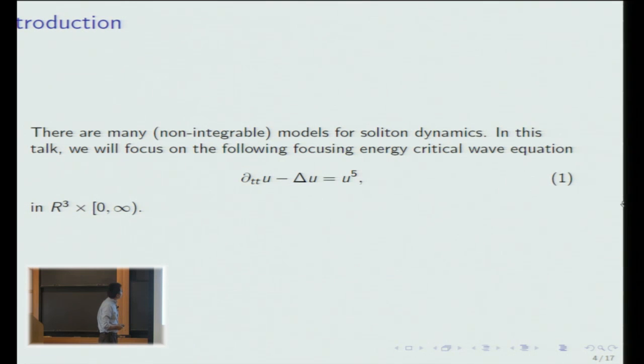Now, to understand what happens for the non-integrable equations, we can consider many models. In this talk, I will focus on this simplest possible model. You have this linear wave equation with this nonlinearity in three dimensions: ∂tt u − Δu = 0 becomes ∂tt u − Δu + |u|^4 u = 0. This five appears naturally because in this case, the conserved energy is dimensionless. So this is basically you have linear wave equation and you add a nonlinearity to it so that you can have some nontrivial dynamics.